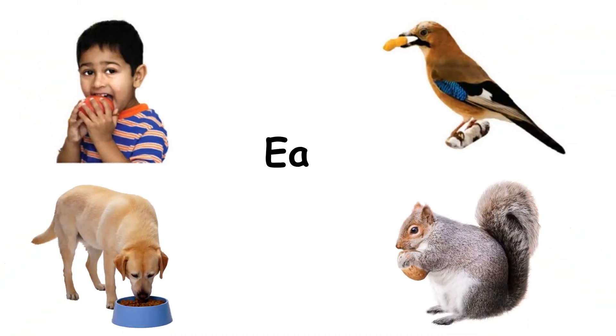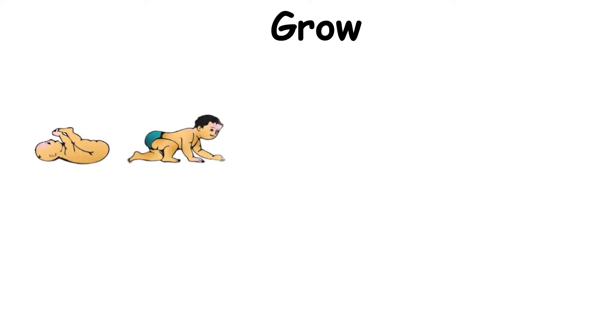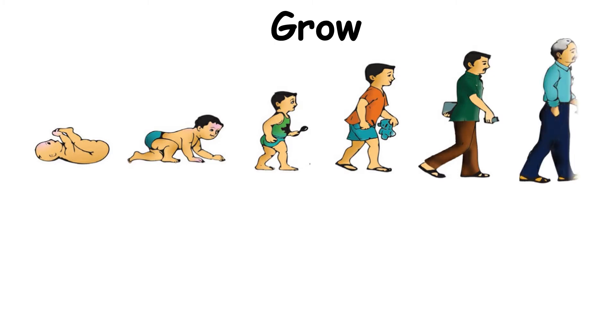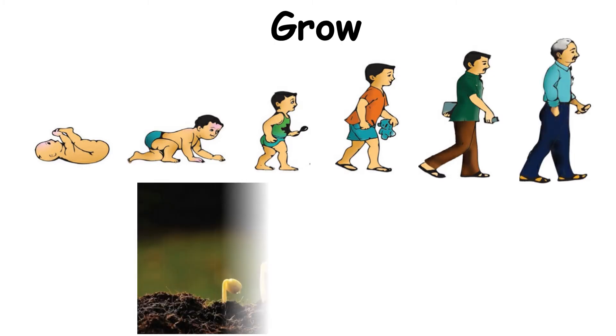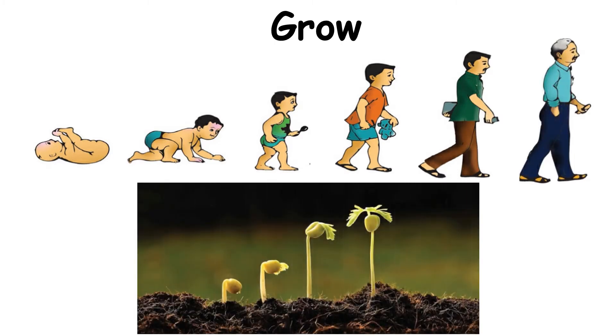Living things can eat. Living things can grow. For example, a human being can grow from a child to an adult. A plant can grow from a seed.